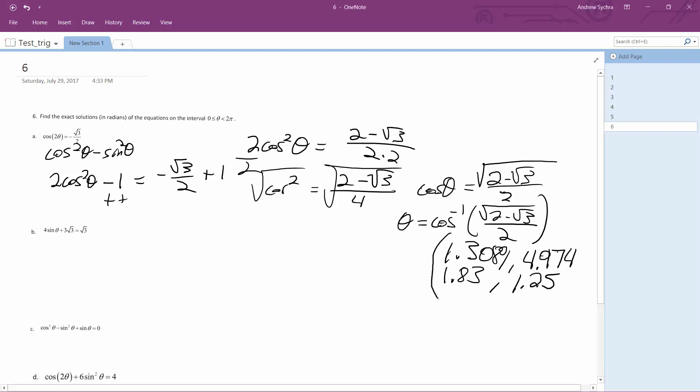So here's your solutions to the double angle of the cosine, so cosine of 2 theta is equal to negative square root of 3 over 2. All right.